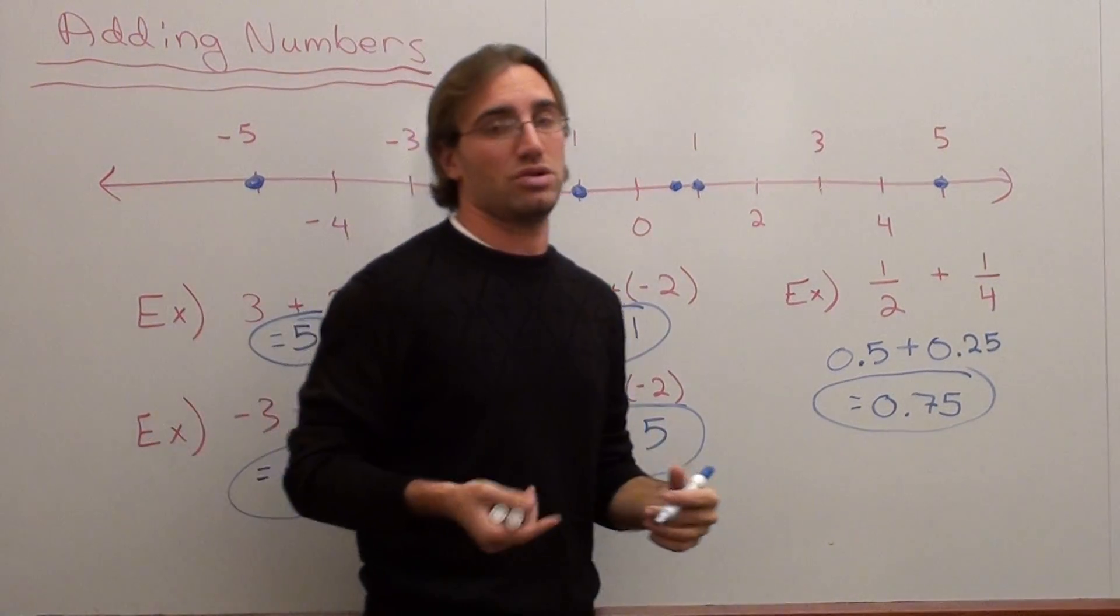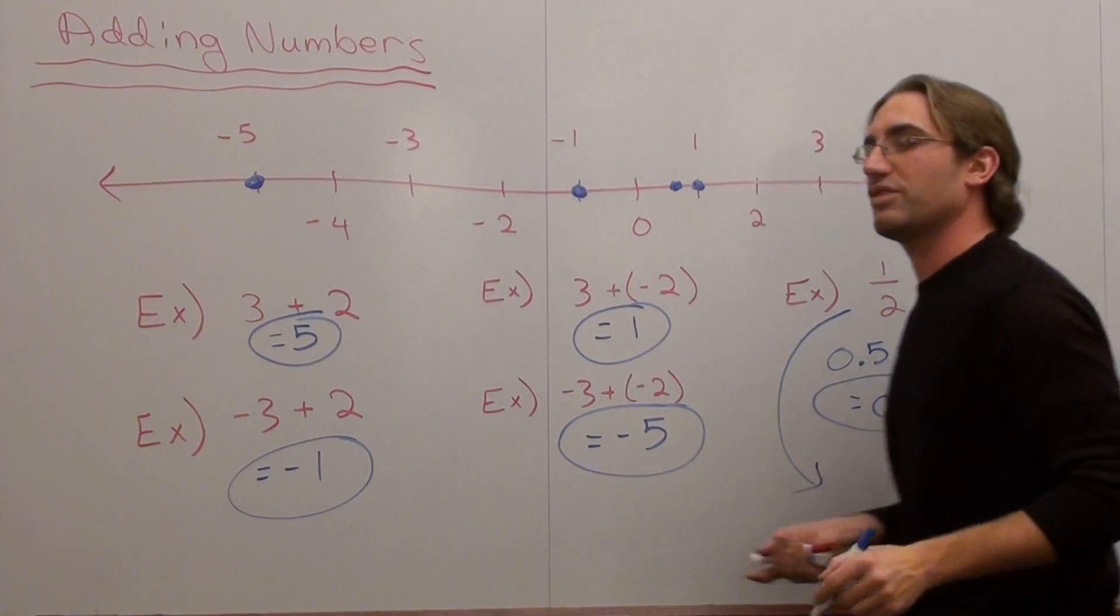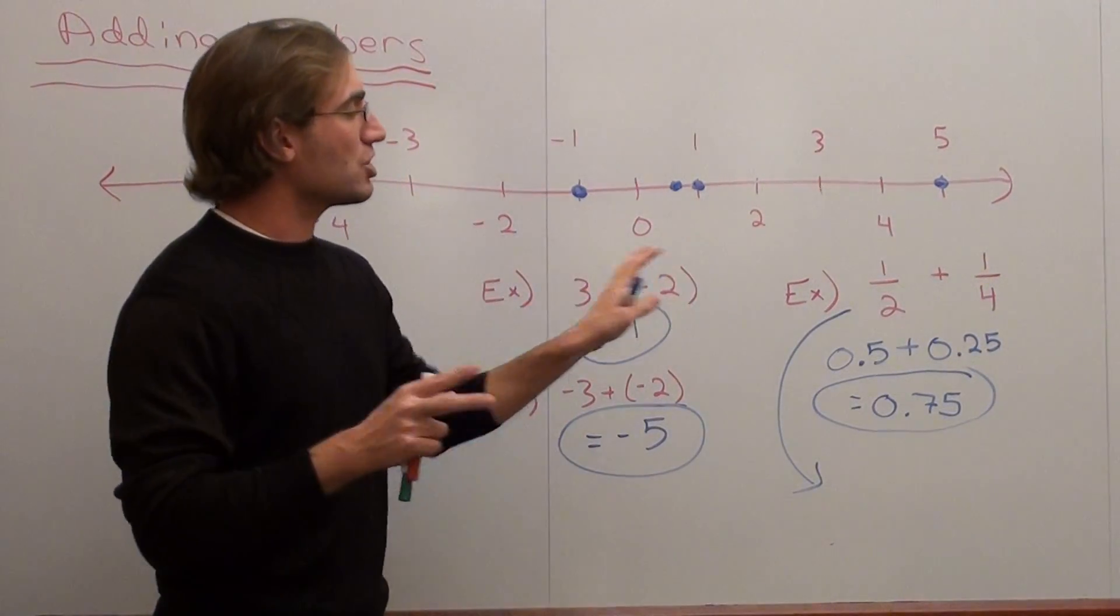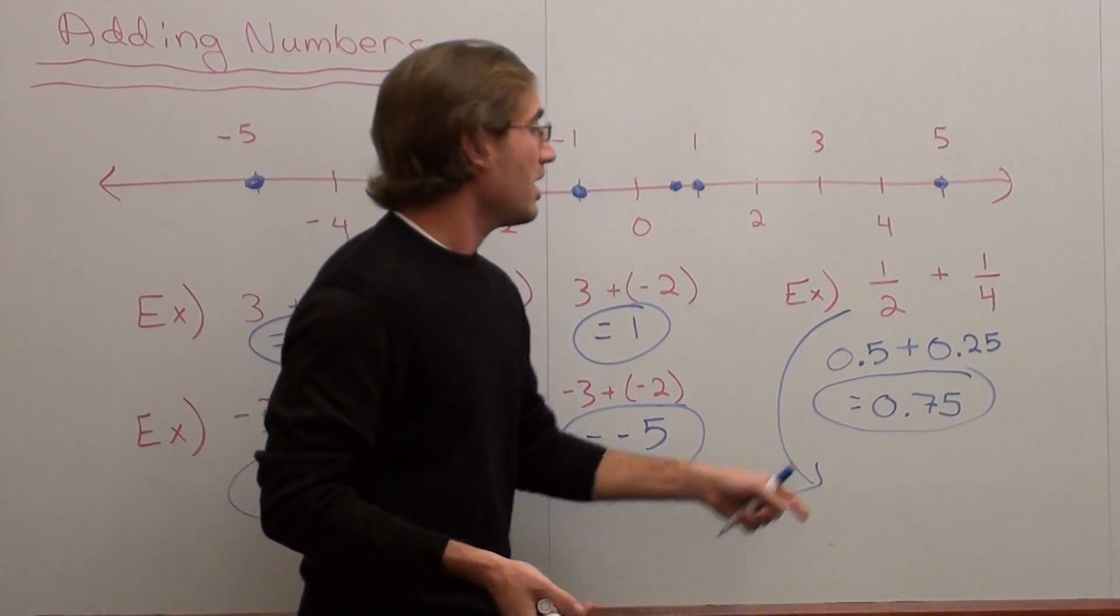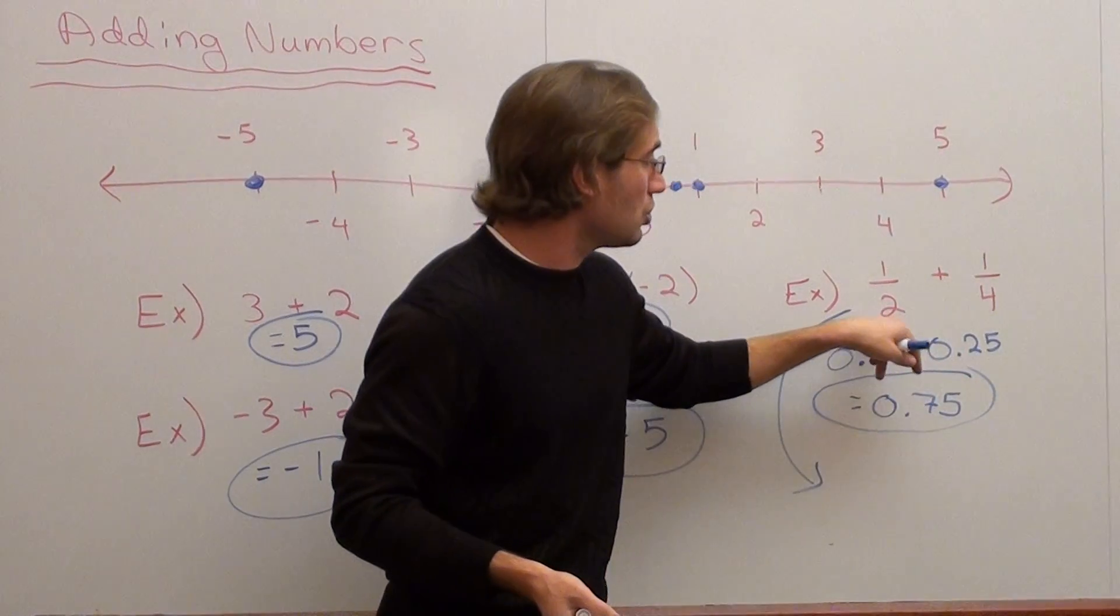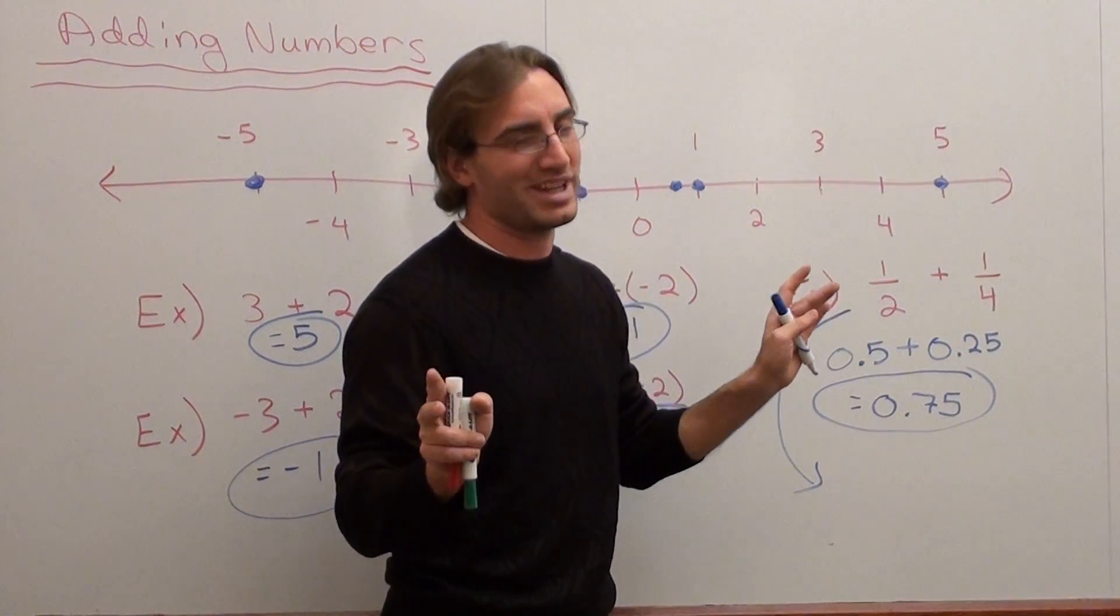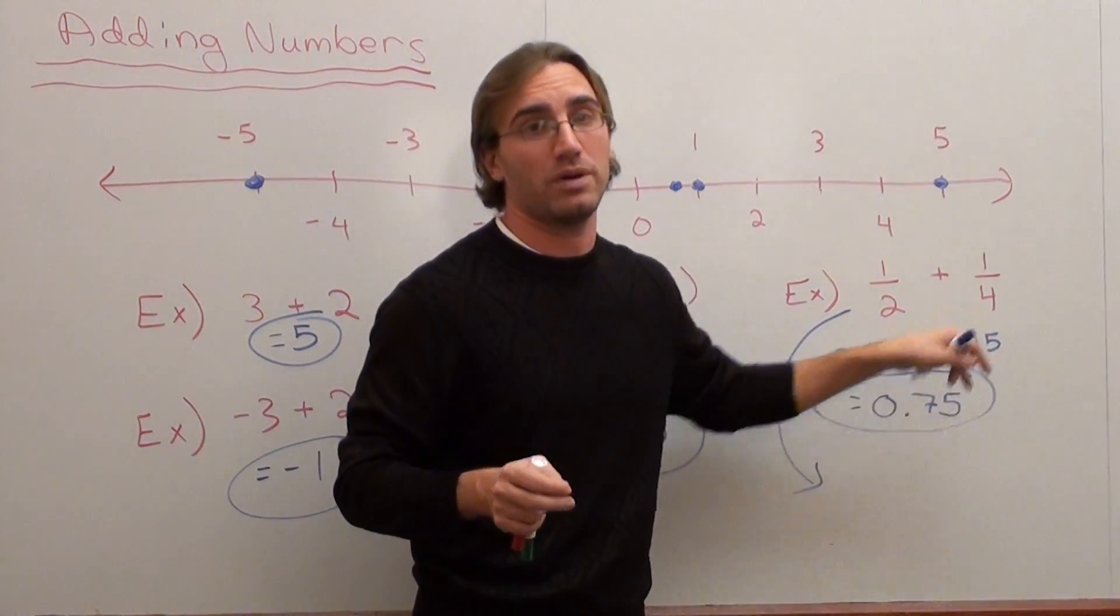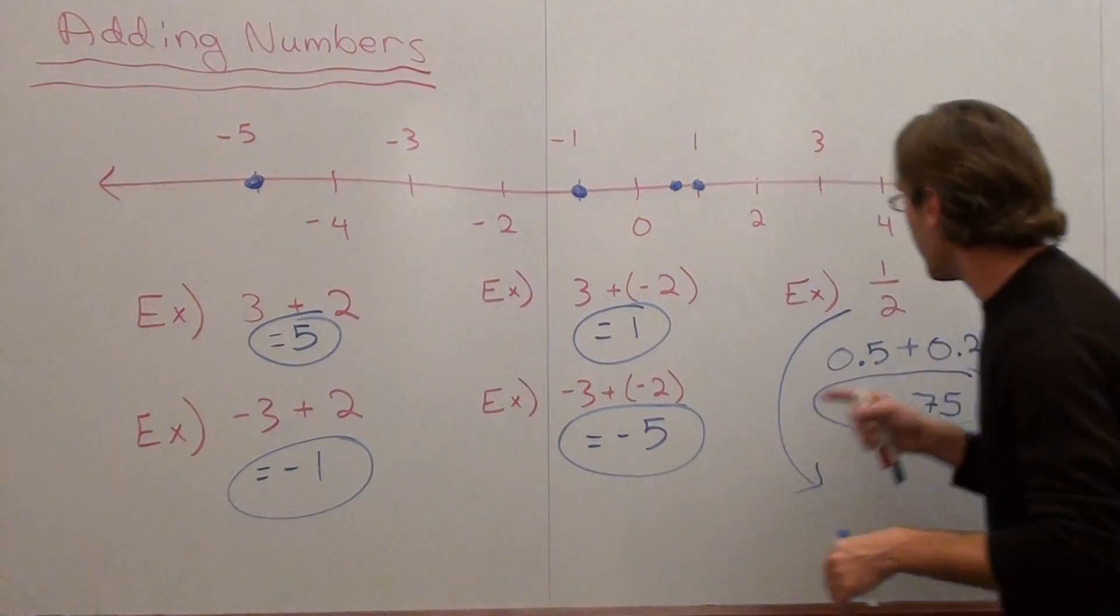The other way to do it, which I would probably recommend especially if you're already used to fractions, is turning both fractions into a common denominator, or getting the common denominator in both fractions. Now what is the lowest multiple of 2 and 4? The answer is 4. They both go into 4.